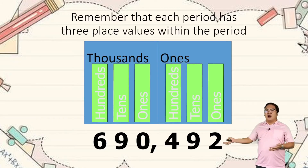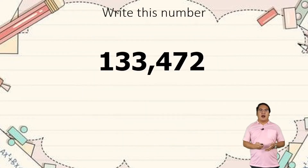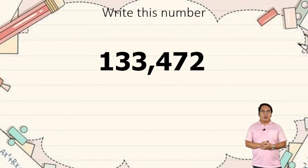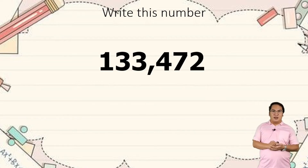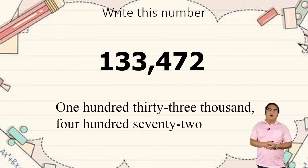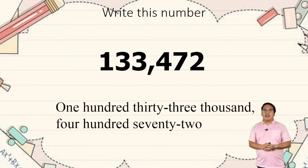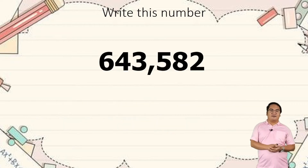Let's move on. We are going to write this number into words. How are we going to read 133,472? The answer is: one hundred thirty-three thousand, four hundred seventy-two.